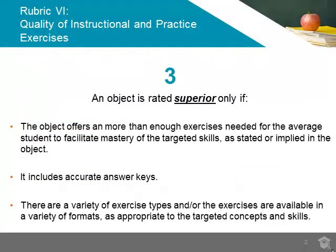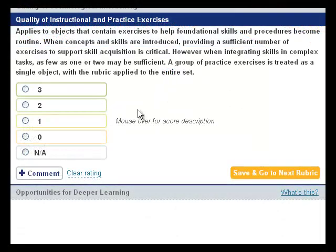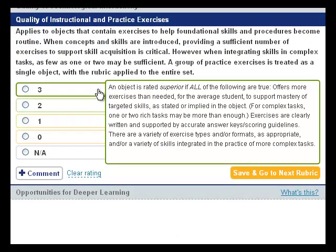An object should be rated superior, a 3 rating, for this rubric if it includes more exercises than needed for the average student to facilitate mastery of the skills targeted in the object. The object should also include an answer key. Exercises must be clearly written, and a variety of exercise types or formats should be included to facilitate mastery.